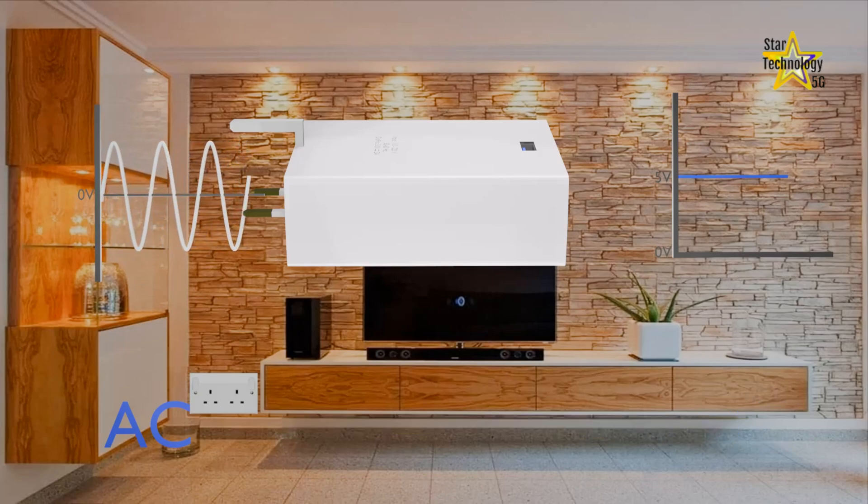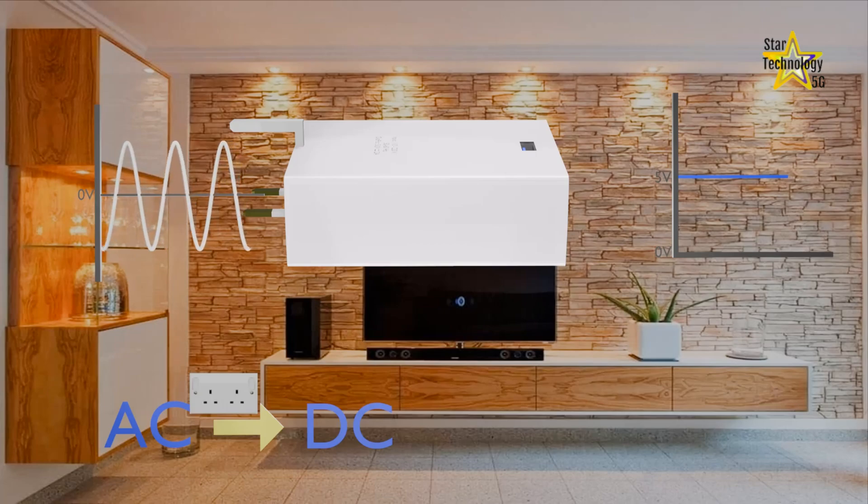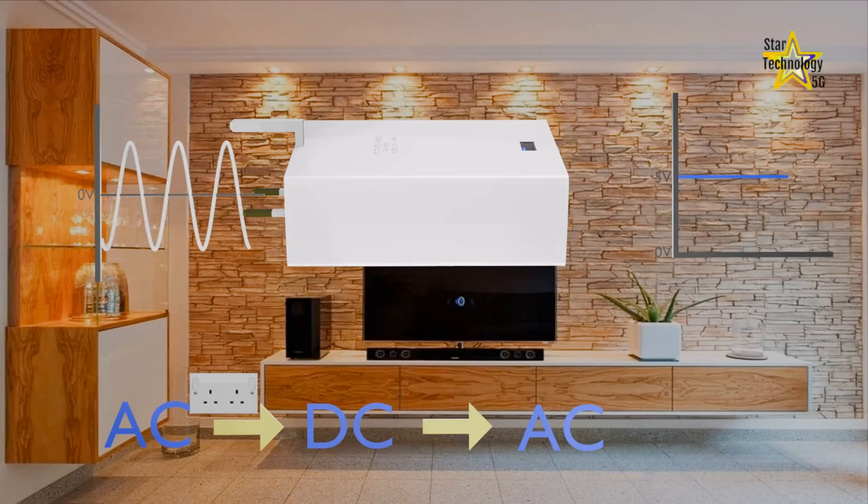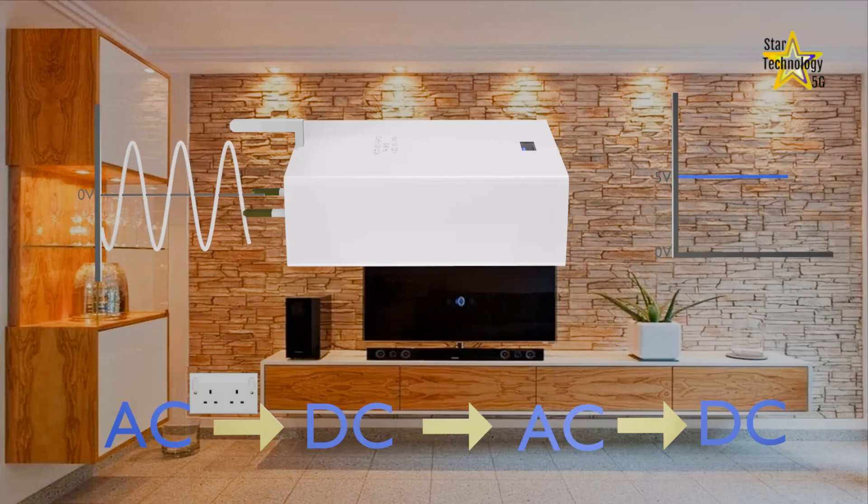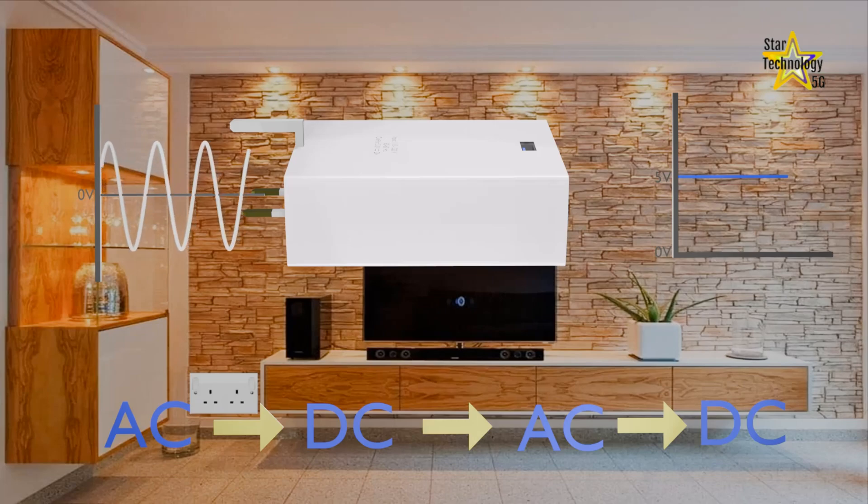First, it converts AC into DC. Then, it converts back DC into AC. And finally, it converts AC into DC. Today we are going to see how the mobile phone charger circuit does this and why there are intermediate steps.